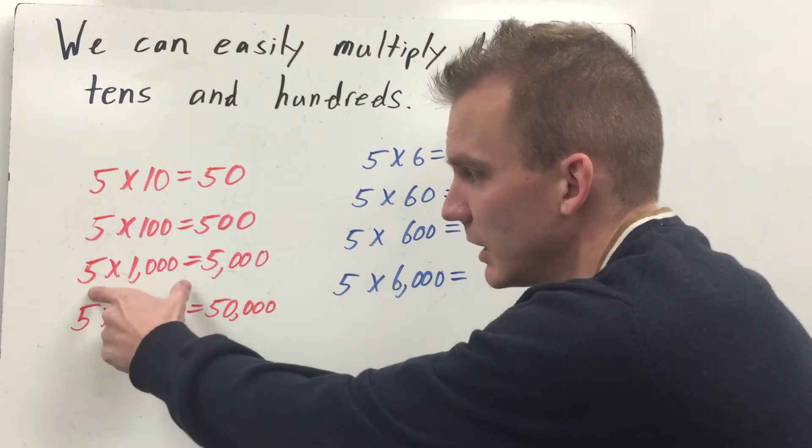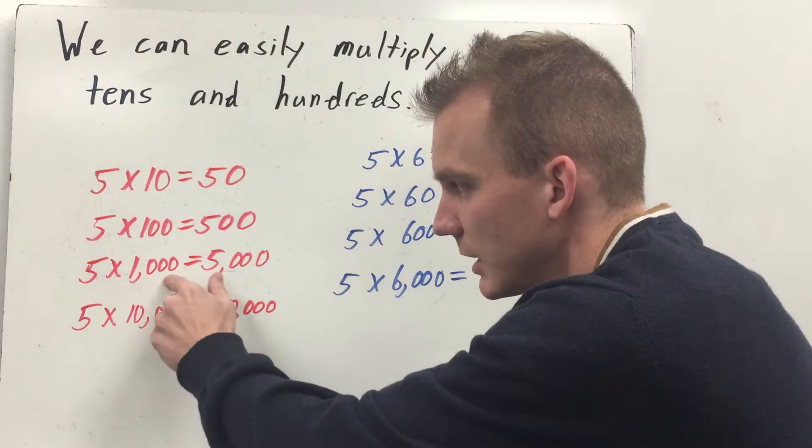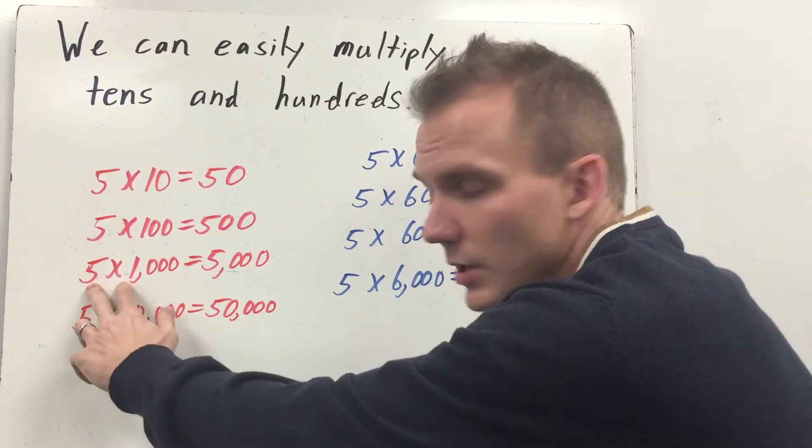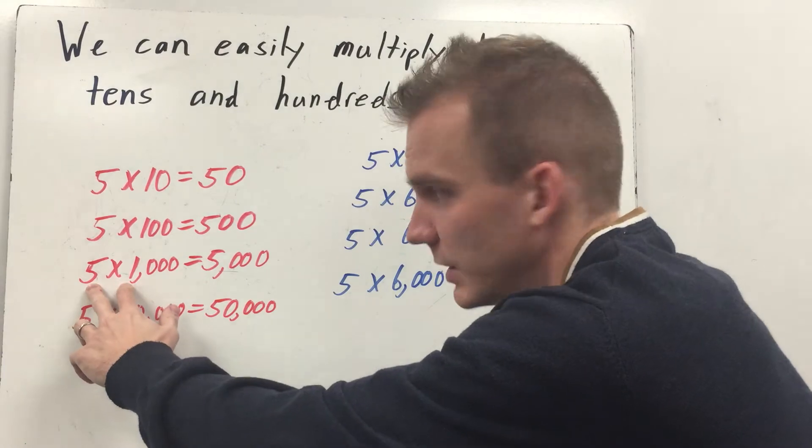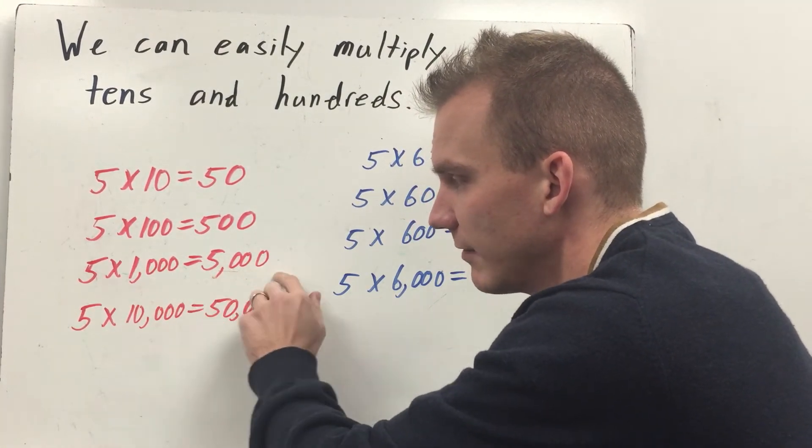Basically, I take my multiplication, my two factors. All the zeros I have that start it, I can take them and put them in the product. Then I just multiply the two numbers I have left. Five times one is five, and there's three zeros here. So three zeros. So it becomes five thousand.